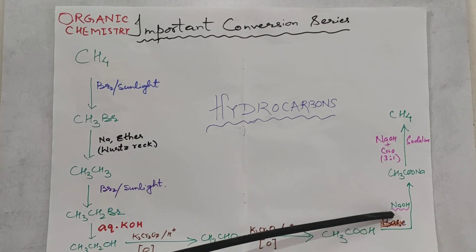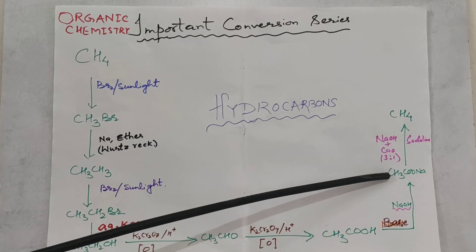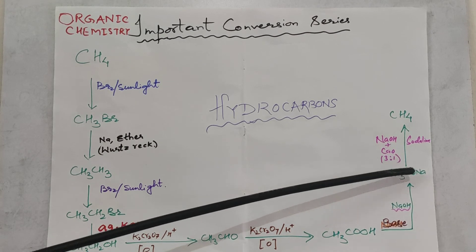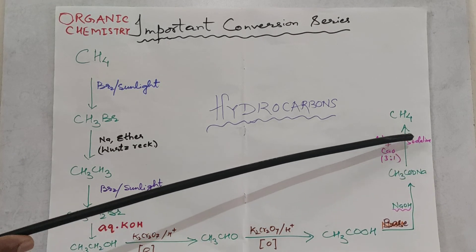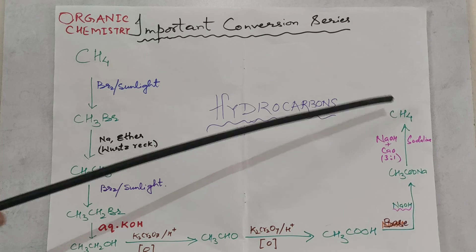Acetic acid, when treated with a base like NaOH, forms sodium acetate, also called sodium ethanoate. Sodium ethanoate is then treated with soda lime and heated to form methane, completing the conversion cycle.